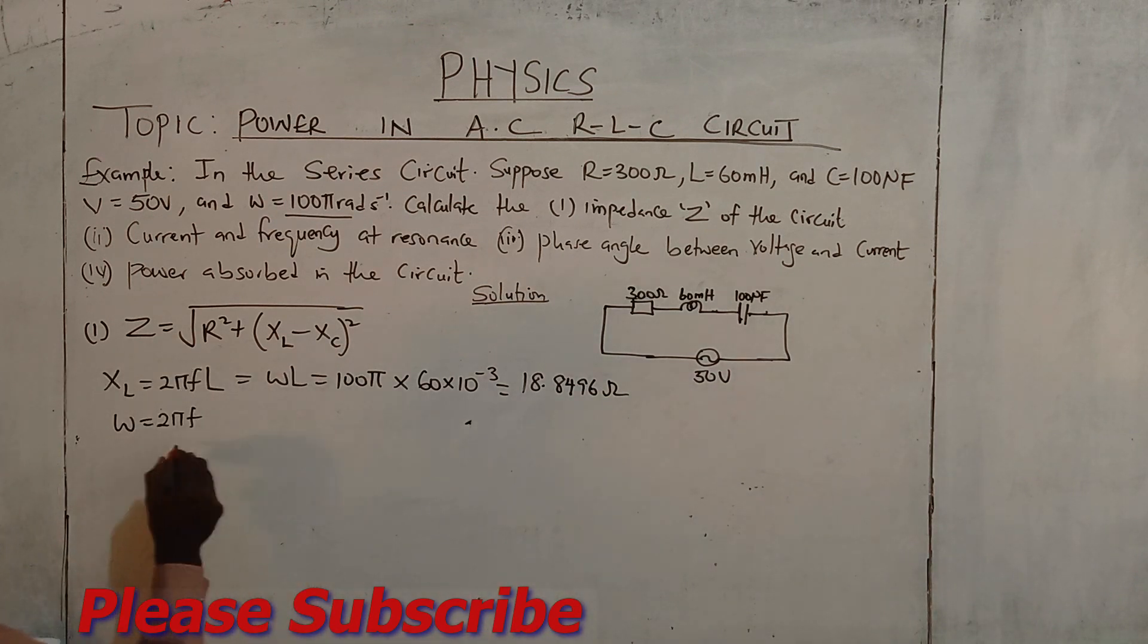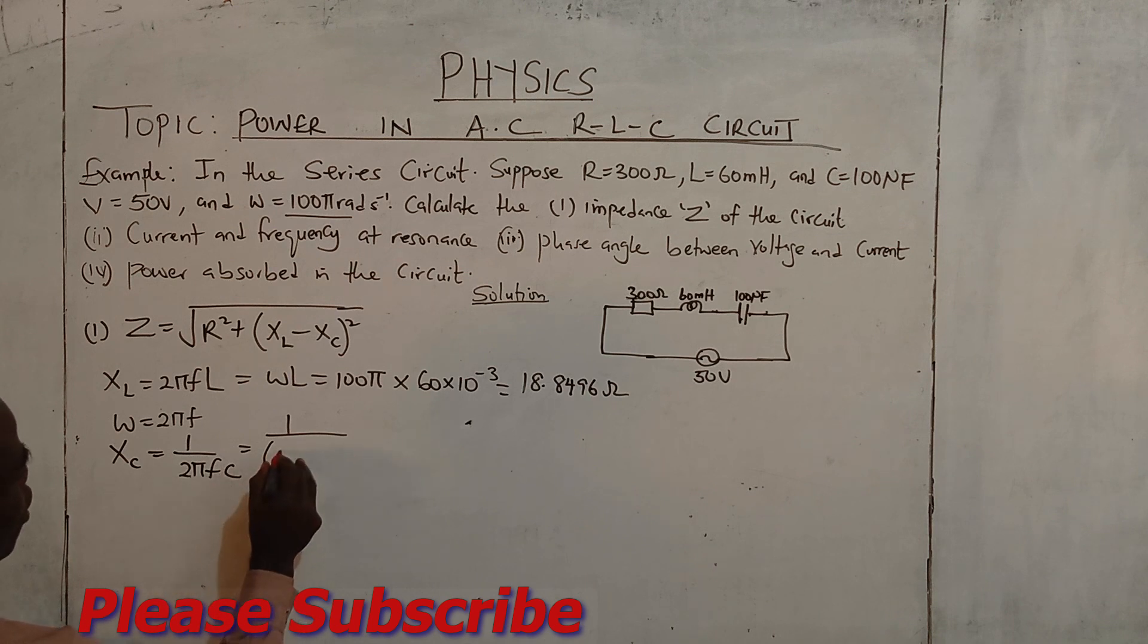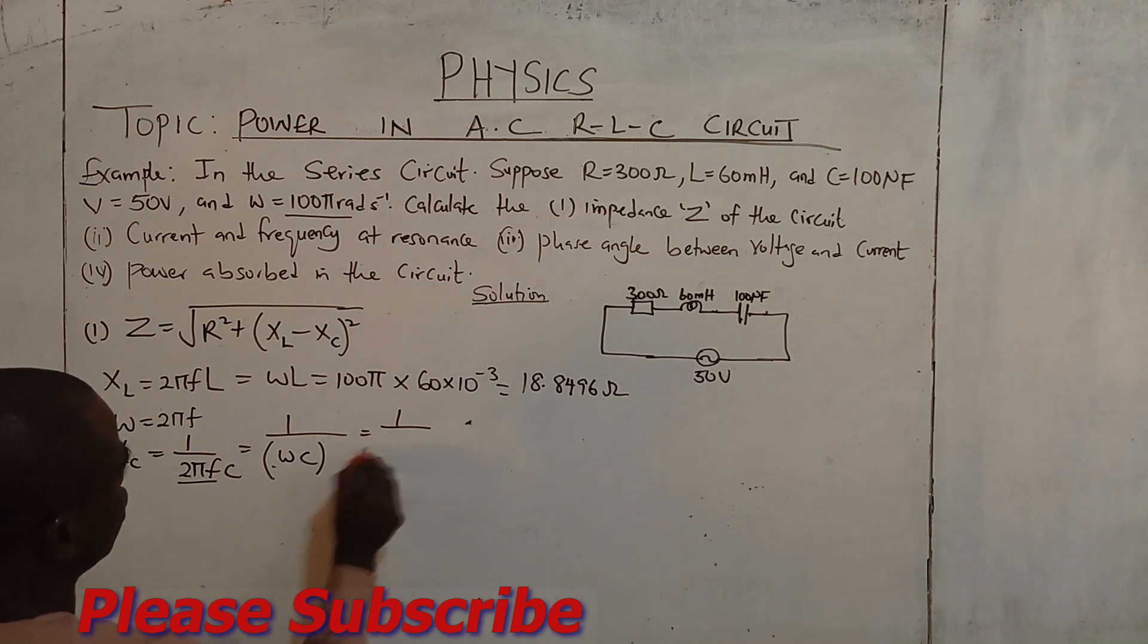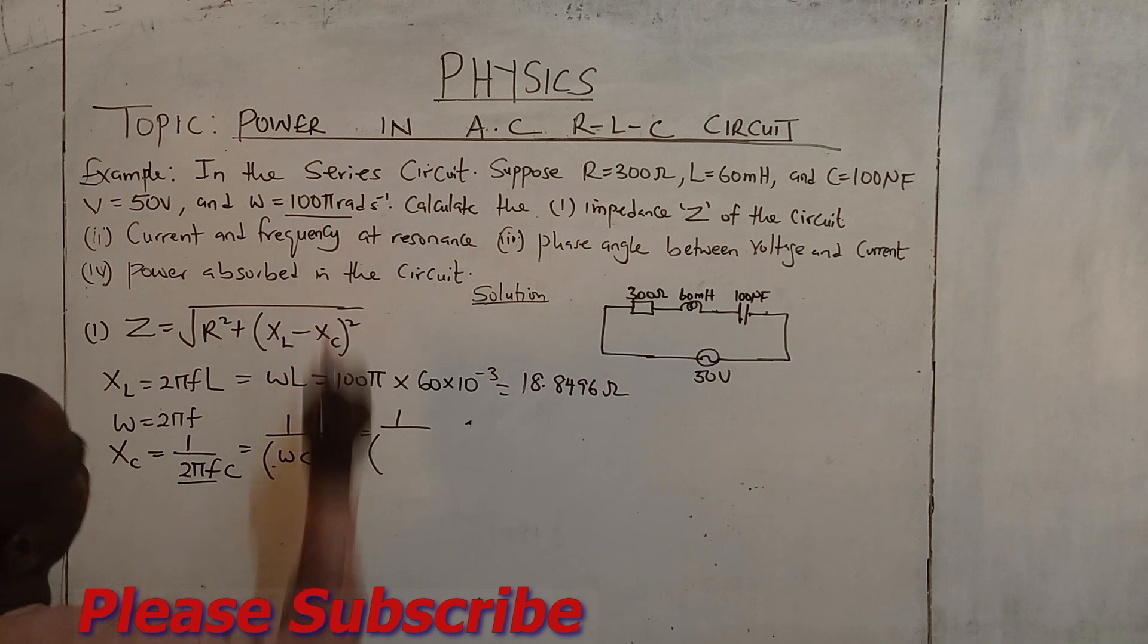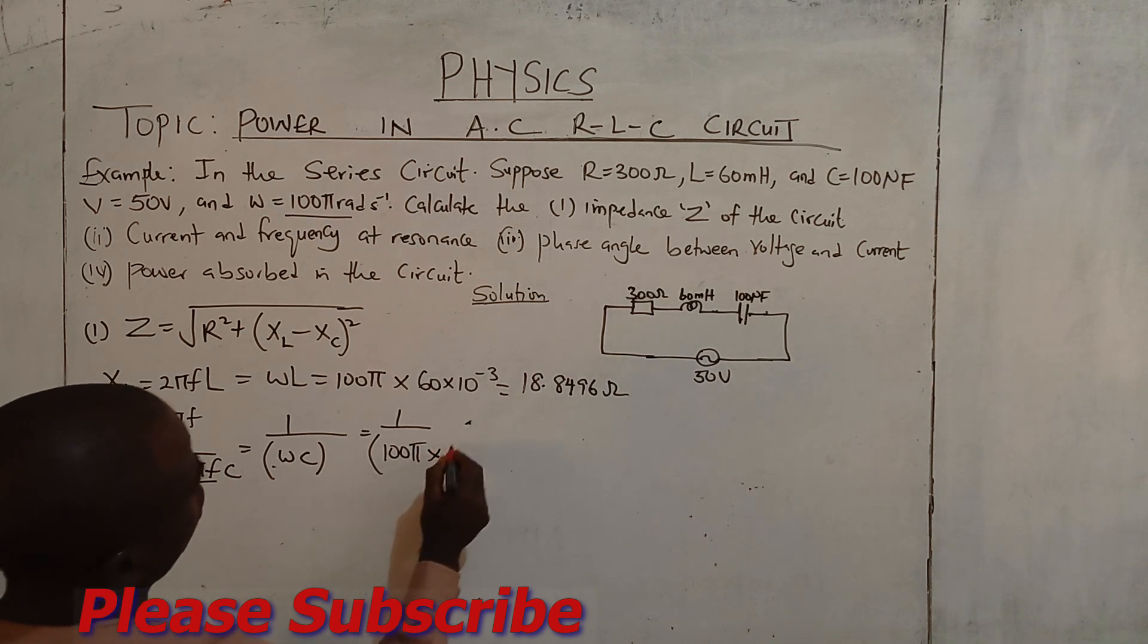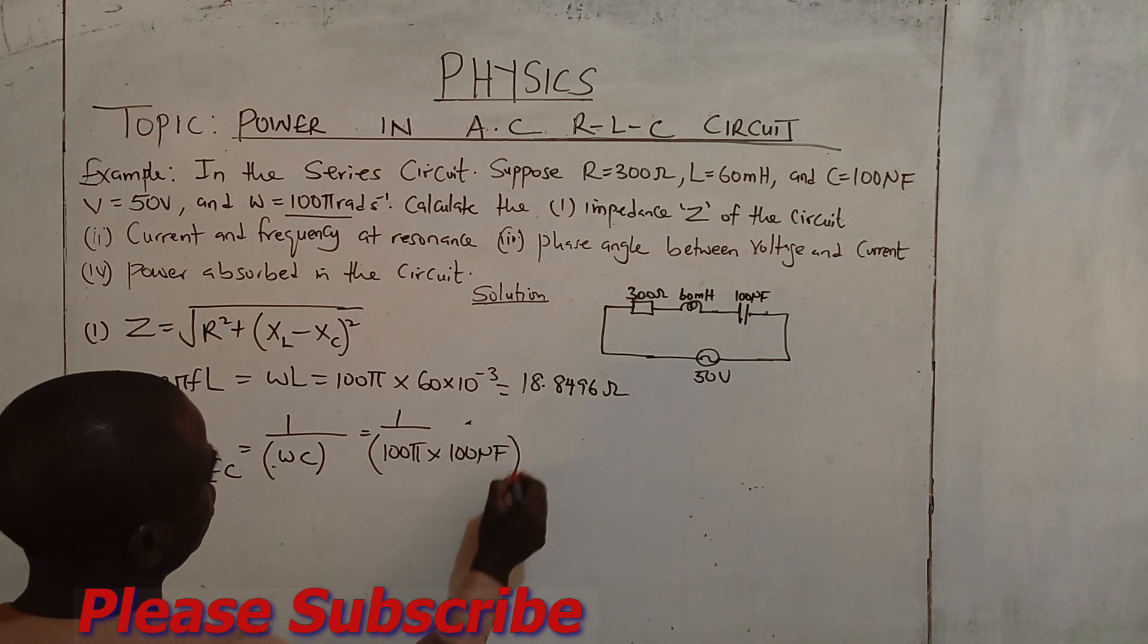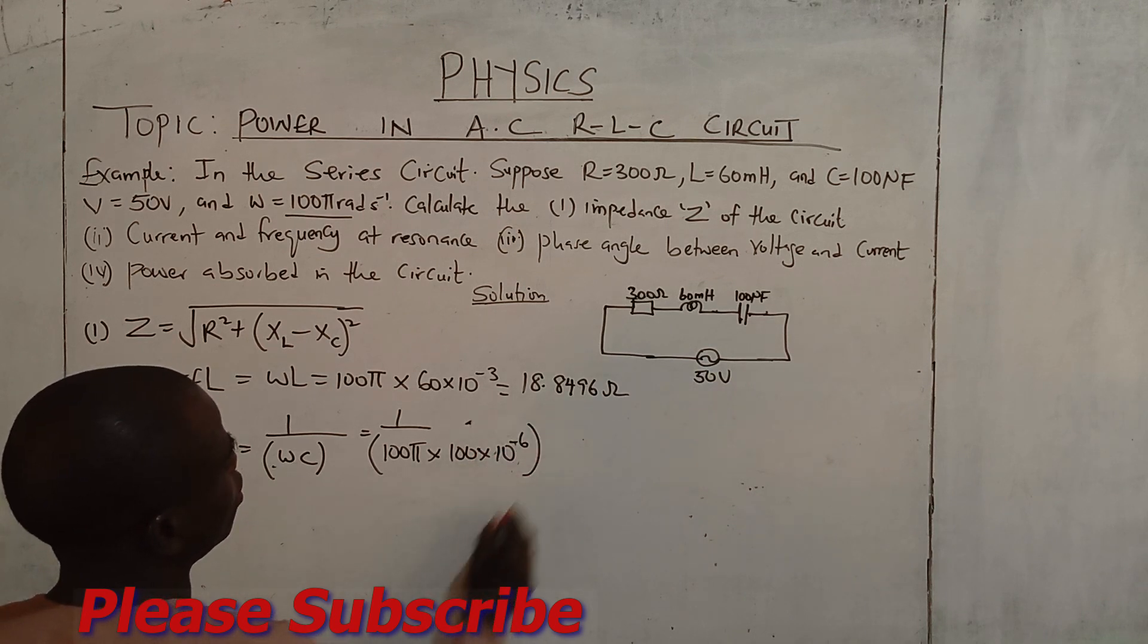Now we don't have XC. XC equals 1 over 2π f C. You don't have 2π f, you can say 1 over ω, angular speed C. Because ω is given as 100π times C, 100 microfarad. Now let's change that micro, times 10 to the power minus 6.